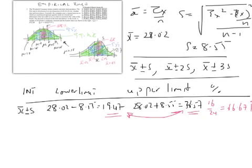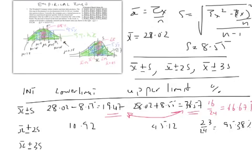And then we will continue with x-bar plus or minus 2s, and we will get the following ranges. 10.92 to 45.12. And it turns out there are 23 out of 24 values in there, which gives us 95.38 percent. And then last but not least, x-bar plus or minus 3s gives us 2.37 to 53.67. And all of the values, 24 out of 24 is in that range, which is 100 percent.